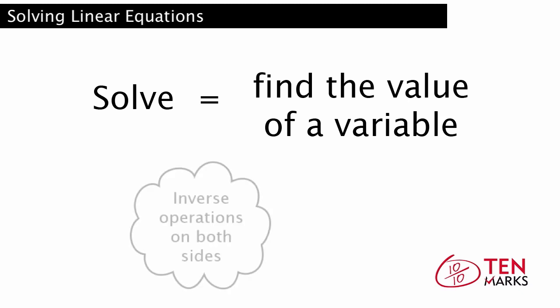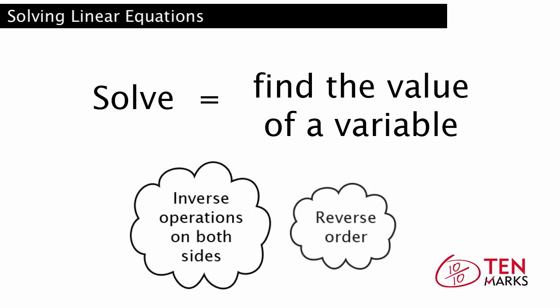To isolate a variable to one side of an equation, we use inverse operations based on the operations performed on the variable. The inverse operations are applied in the reverse order as the original ones applied on the variable.